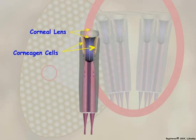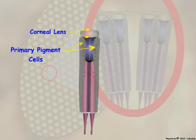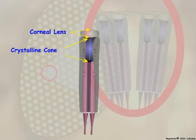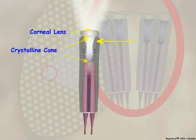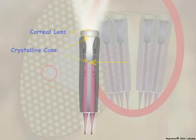The corneagen cells secrete the corneal lens, then later differentiate into the primary pigment cells. Below the corneal lens is the crystalline cone. This structure is either secreted or formed by four cells called Semper's cells. Light enters the corneal lens and is focused on the light-detecting apparatus by the crystalline cone.